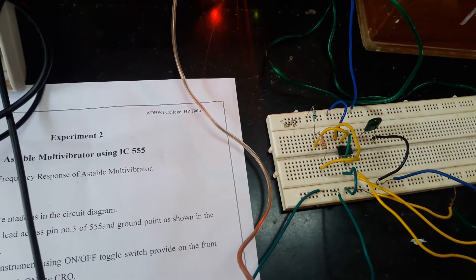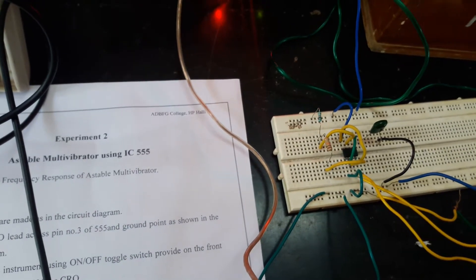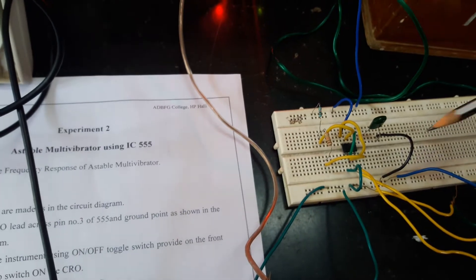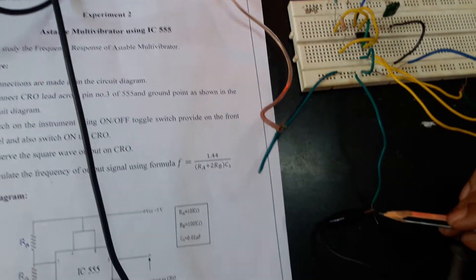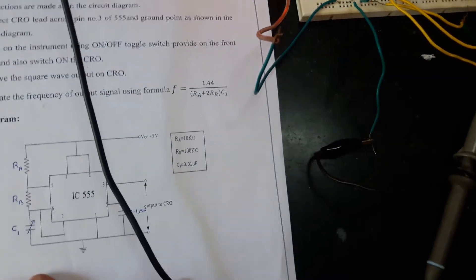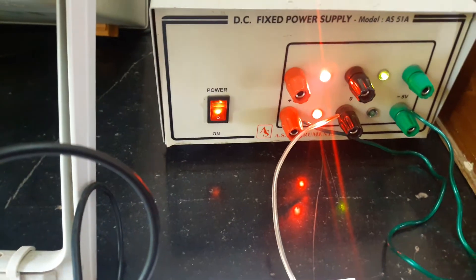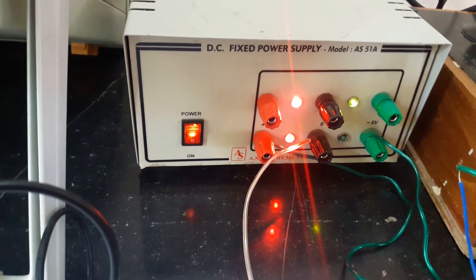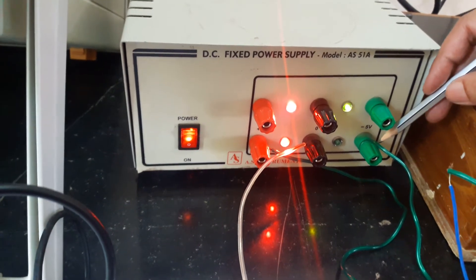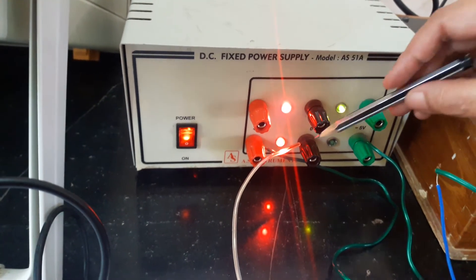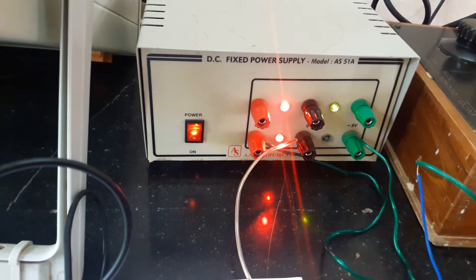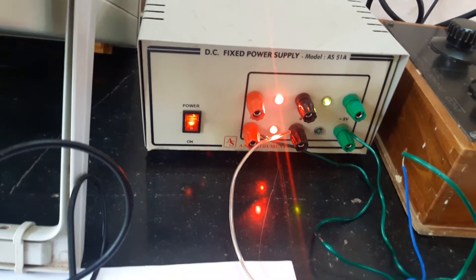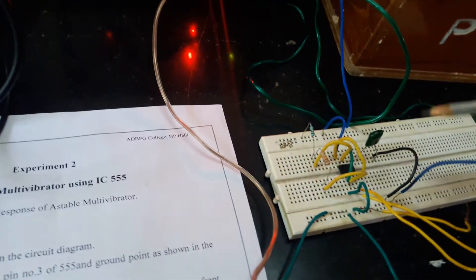So, in this experiment, we are going to measure the frequency response of the astable multivibrator. The output we are measuring at pin 3 and of course, the negative of the CRO should be given to ground and plus Vcc that is plus 5 volts is given to pin number 8 here and resistance RA is coming to that point we are giving and minus Vcc should be grounded and this ground also we are giving to ground here and I forgot to explain you the capacitor position here.